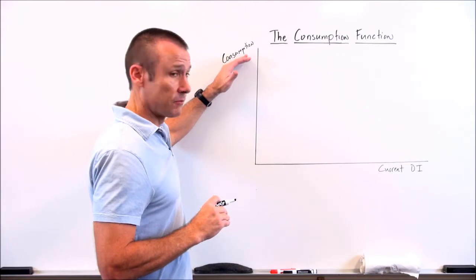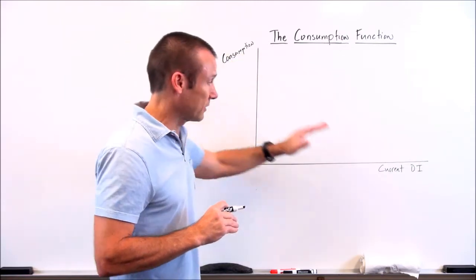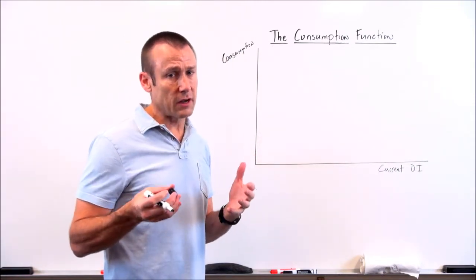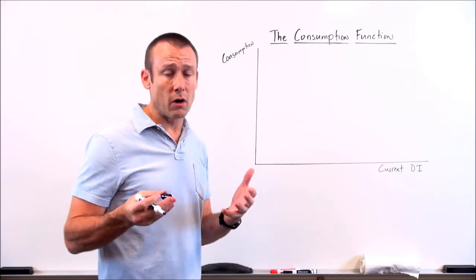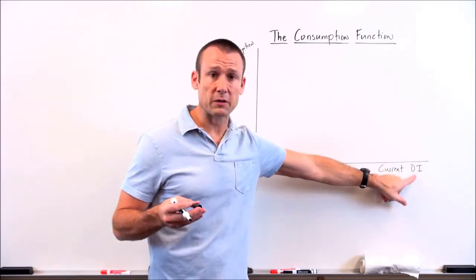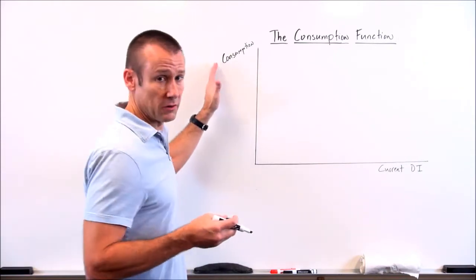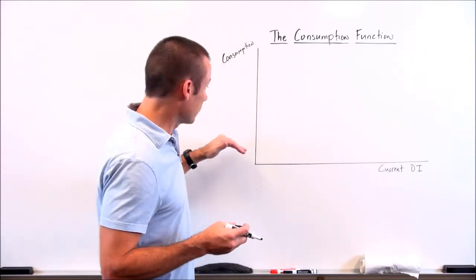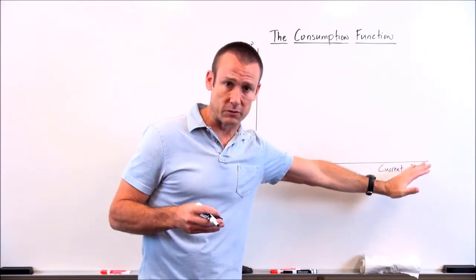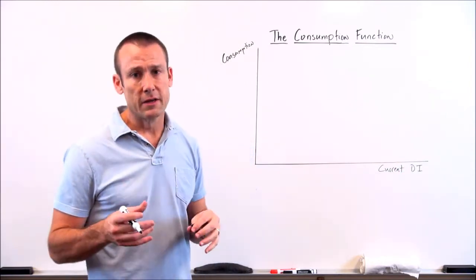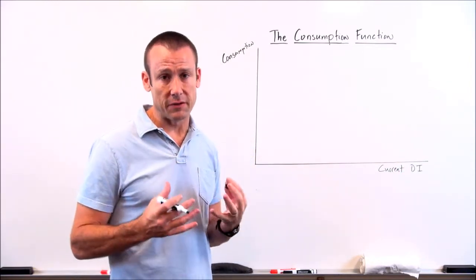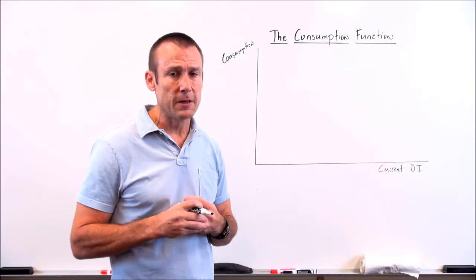So I've got my level of consumption on the vertical axis and current disposable income on the horizontal axis. The units of measurement here: disposable income is measured in dollars, and consumption is measured in dollars. So think of these values as dollars on both axes. Now I want to get the actual function on the graph — I've got the graph set up and I'm ready for the function.